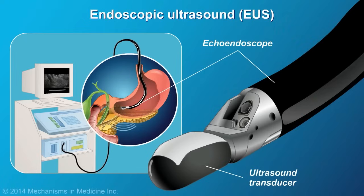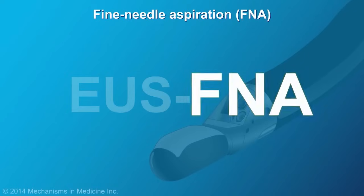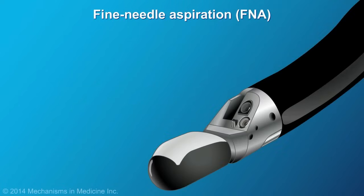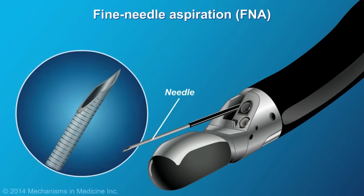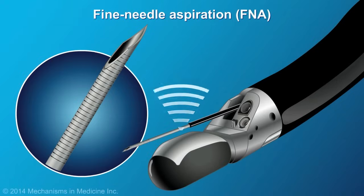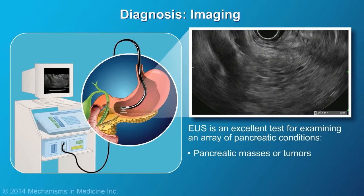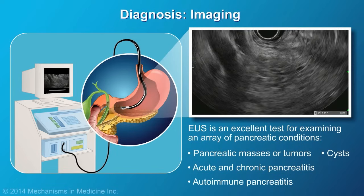These images are interpreted by your doctor to pinpoint areas of interest. EUS-FNA simultaneously involves a procedure referred to as fine needle aspiration, or FNA, which allows your doctor to sample areas of interest for analysis. FNA uses a specialized needle that can be inserted through the wall of the stomach or intestine into the pancreas. Using EUS for guidance, the physician is able to accurately visualize and direct the needle to the target area. EUS is an excellent test for examining pancreatic conditions including pancreatic masses or tumors, cysts, acute and chronic pancreatitis, and autoimmune pancreatitis.